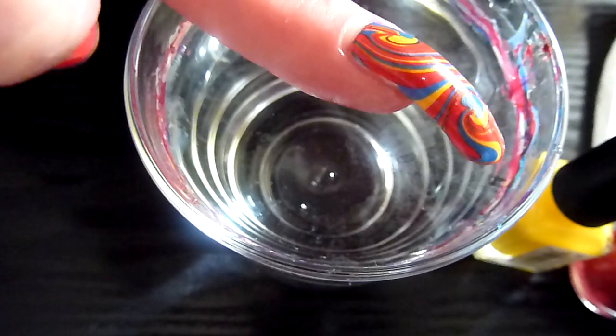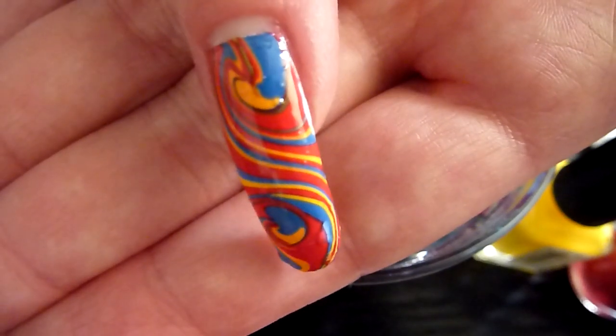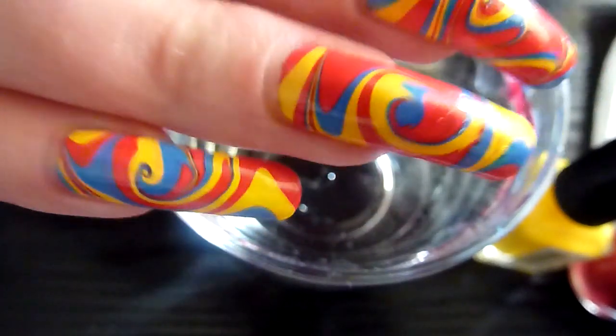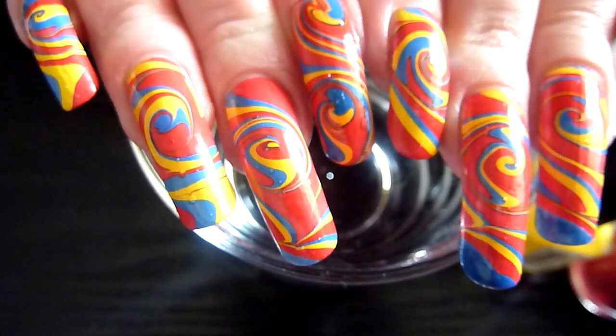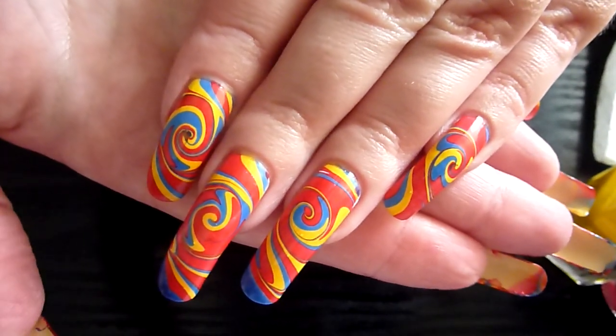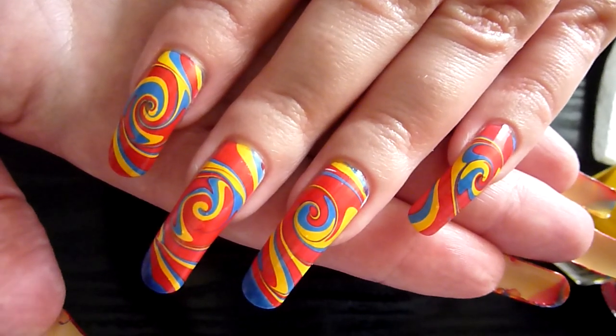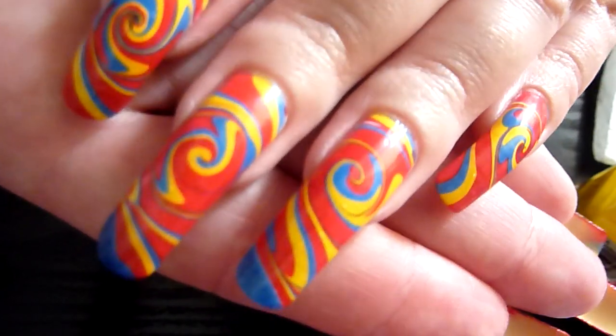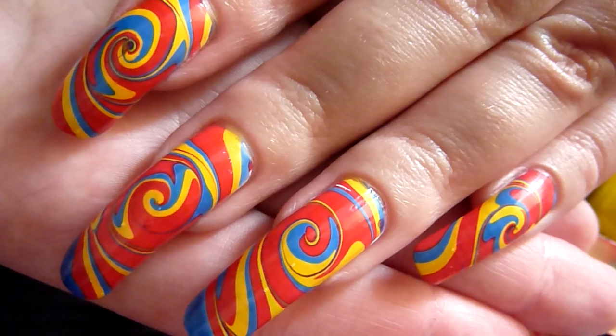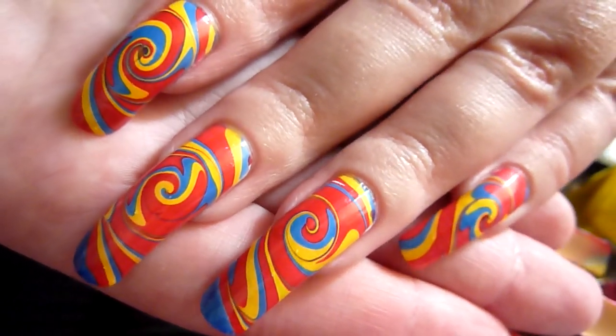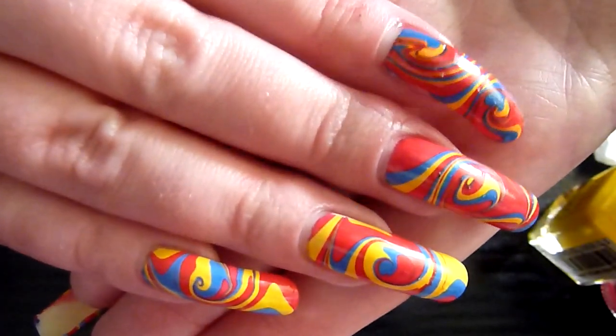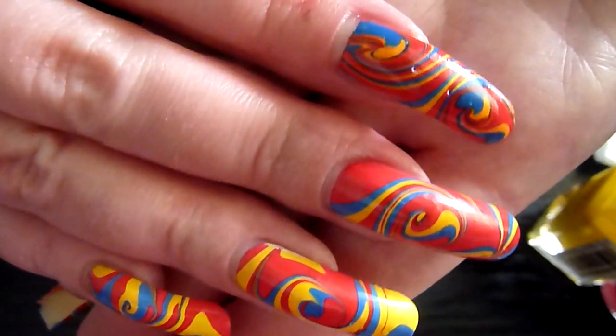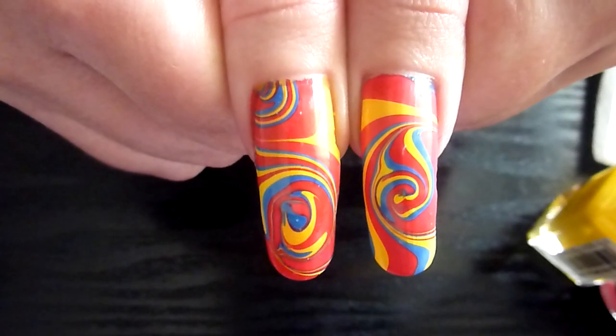We can see the design now. It's come up. Nice sort of double swirl there. That's the design on the rest of my nails. Very psychedelic. Get the water out of the way a little bit. Give it a bit of a closer look. That's my left hand. My right hand. I think that's looking pretty good.